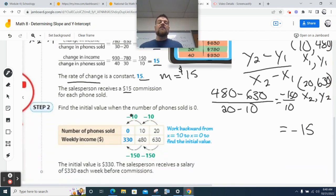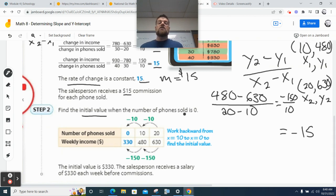And then we want to find the initial value. Well, we don't know what the initial value is, but we know that the initial value occurs when there are zero phones sold. So they did something kind of slick. They said, look, let's work backwards. To go from this way to this way, I'm going to subtract 10. And to go from here to here, I'm going to subtract 150. Let's just go back one more step. In other words, if I sell zero phones, I should get $330. In other words, each salesperson gets a base rate of $330. The initial value is $330. So the salesperson receives a salary of $330 a week before commission. Isn't that the b?